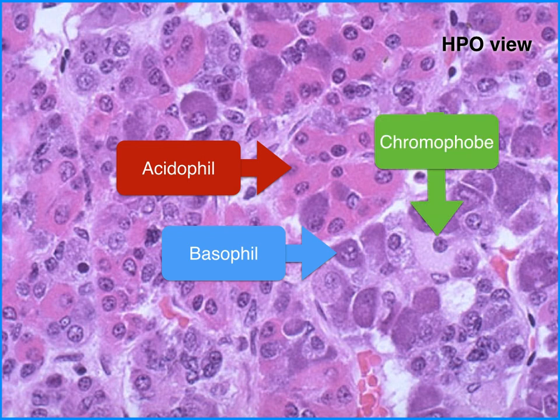Shown by the green arrow are the chromophobes. They are paler compared to both acidophils and basophils. They are cells that have degranulated their contents.